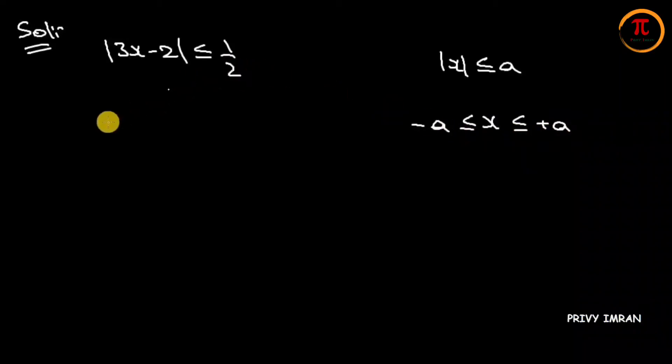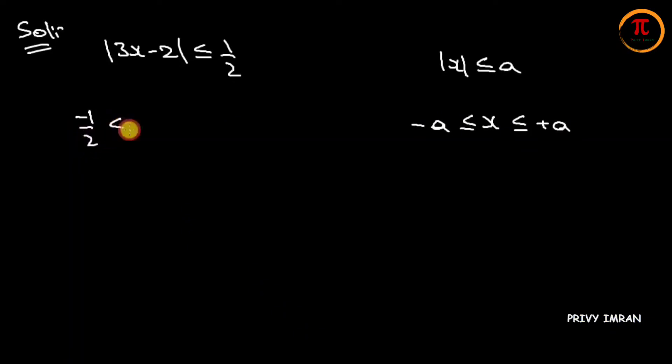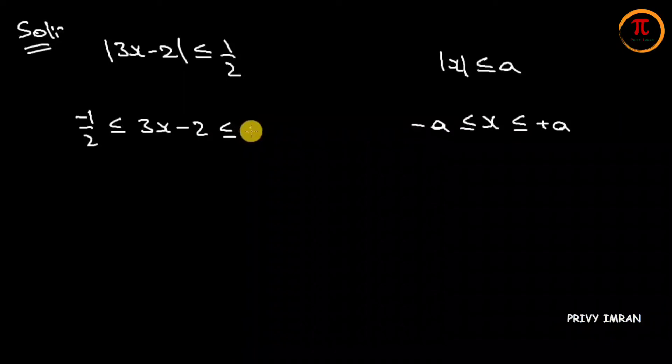Then the next step can be written as: minus 1 by 2 is less than or equal to 3x minus 2 is less than or equal to plus 1 by 2.